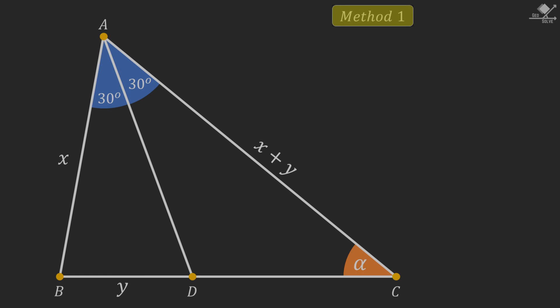In this Olympiad question, for the given information on the screen, we need to find the angle alpha. Let's start with solution method 1.